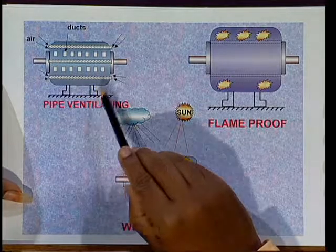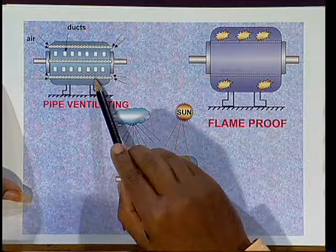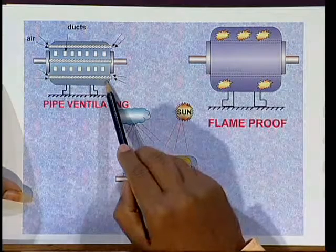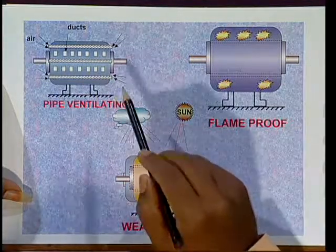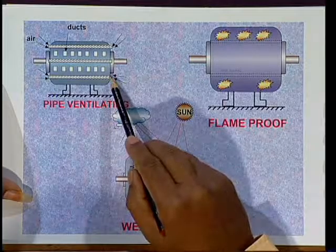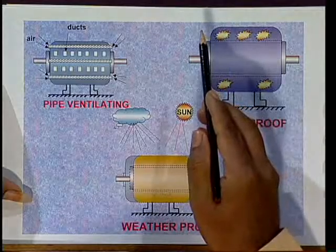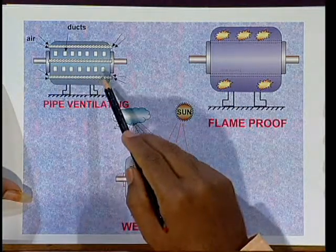In the pipe ventilating type, the motor is totally enclosed, but pipes are provided on the outer surface of the enclosures through which separate neat, clean air passes from outside. This type of motor is also used in areas where very high dust is present.